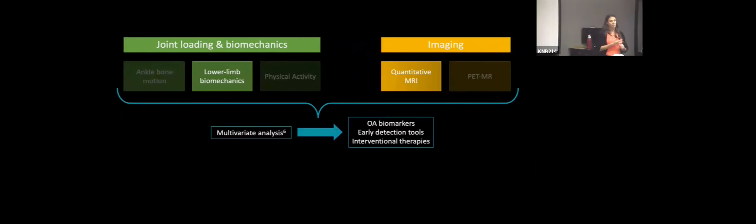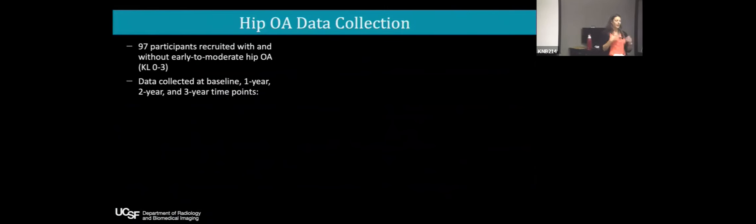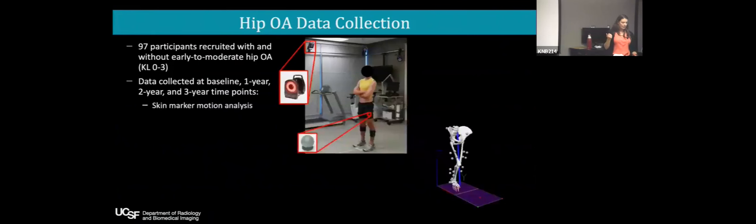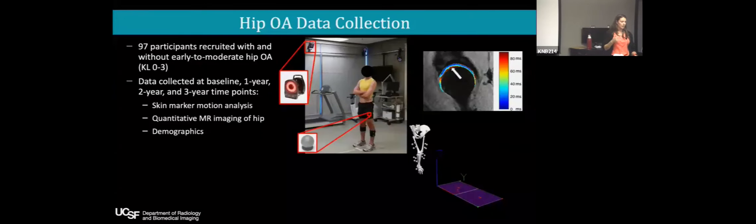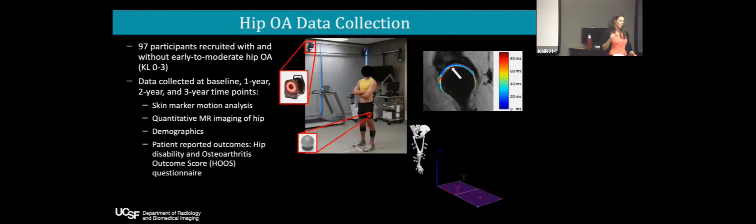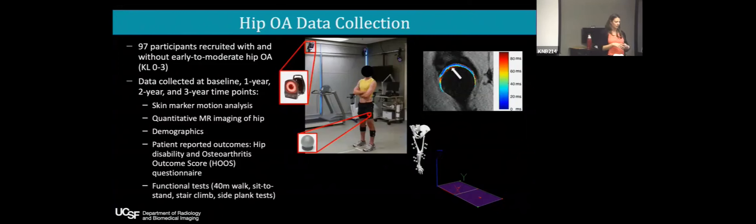Today I'm going to talk about some of the work I've been doing on lower limb biomechanics and quantitative MRI and some of the statistical techniques I've been using. This data was collected and analyzed during my postdoc at UCSF. We collected 97 participants with early to moderate hip OA, KL zero to three, at four time points: baseline, one year, two years, with annual follow-ups. We collected skin marker motion analysis, quantitative MR, demographics, patient-reported outcomes including HOOS questionnaire, and functional tests: 40-minute walk, stair climb, and side plank tests.